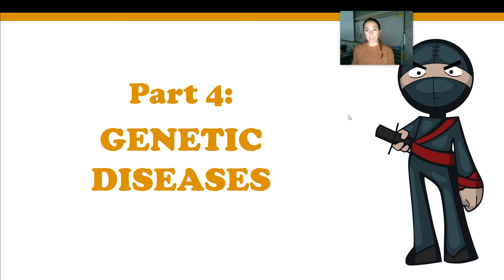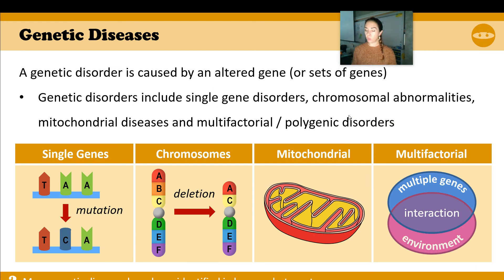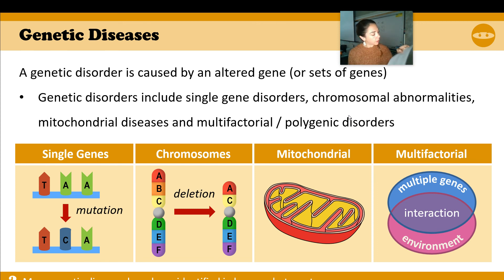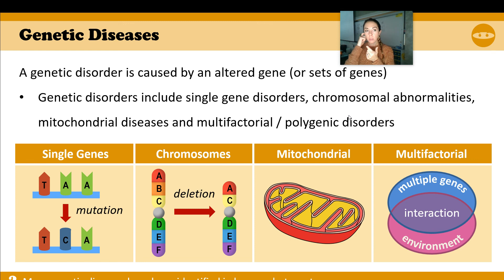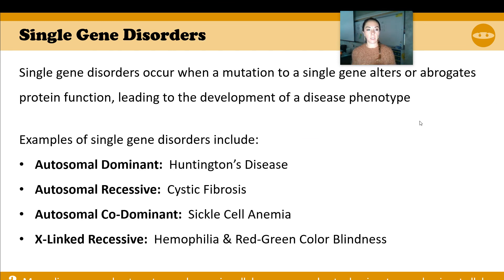Genetic diseases — this is the very last part. You don't have all of this in one place, so let's write it in. There are a couple of different ways we can have genetic diseases: single genes — point mutations, insertions, deletions; chromosomes — whether they're linked together, abnormal in some way, or there's a deletion of an entire segment. We can also get genetic disease from mitochondrial sources, and then multifactorial polygenic disorders. Let's look at some examples.